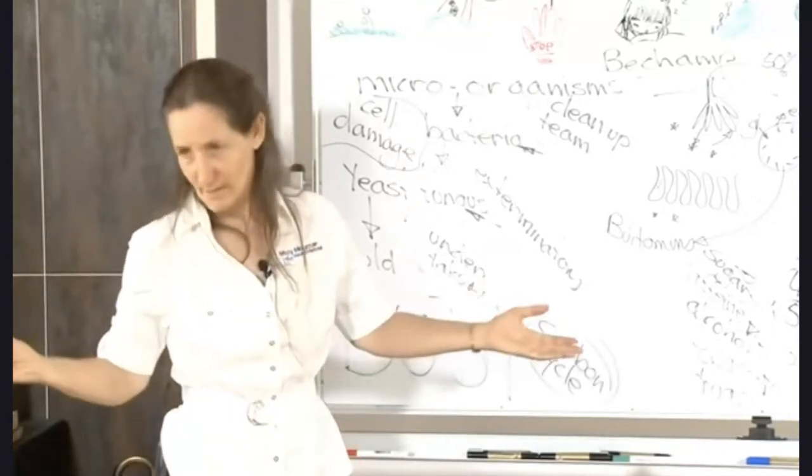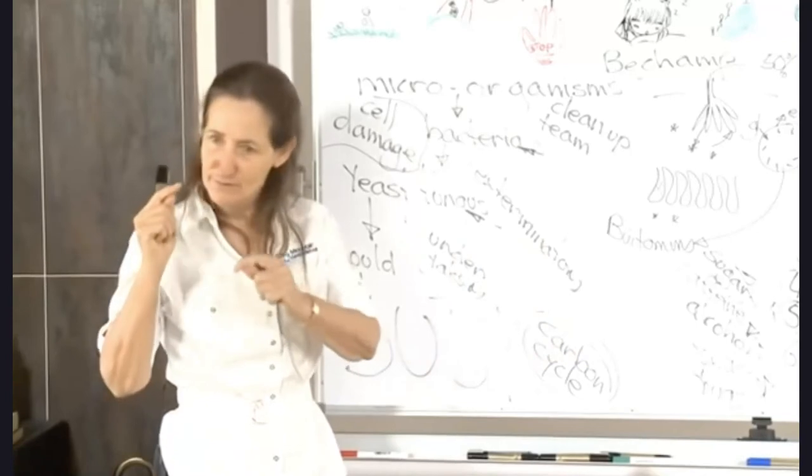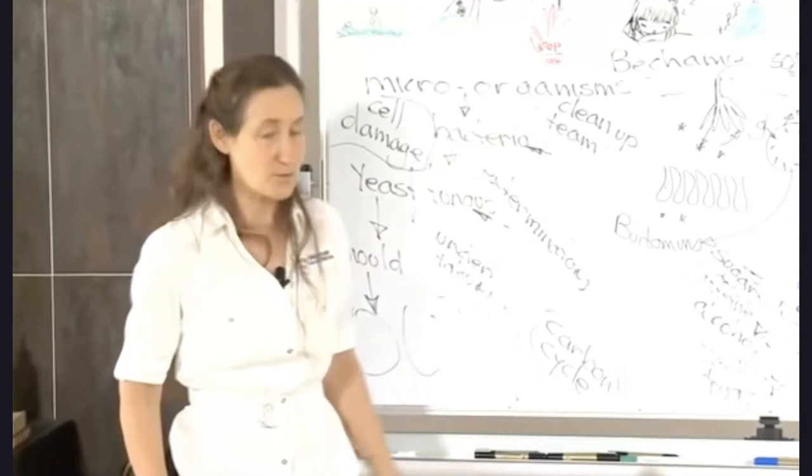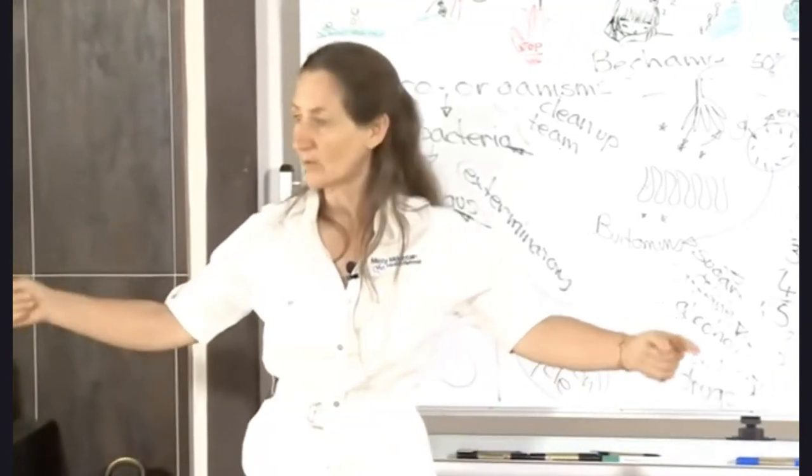Rudyard Kipling wrote a whole poem on it. I won't give you the whole poem, but I'll give you the first stanza. I have six trusty serving men. They taught me all I know. Their names are what, why, when, where, how, and who.